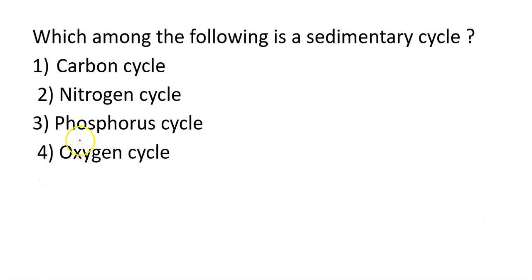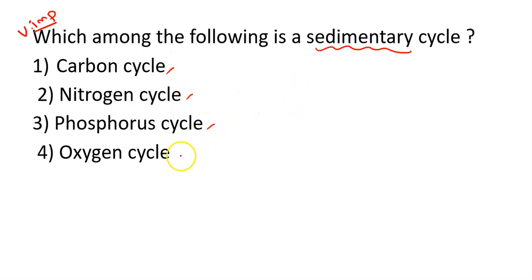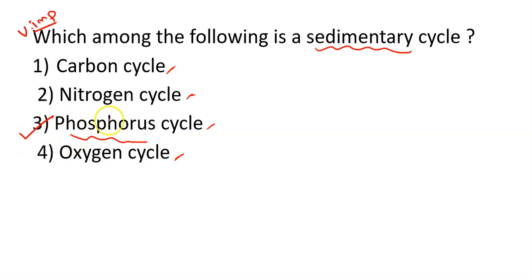Next question — very important and comes up every time: which among the following is a sedimentary cycle? Four options: carbon cycle, nitrogen cycle, phosphorus cycle, oxygen cycle. Carbon cycle, nitrogen cycle, and oxygen cycle are gaseous cycles. The phosphorus cycle is a sedimentary cycle. So our answer will be option 3.